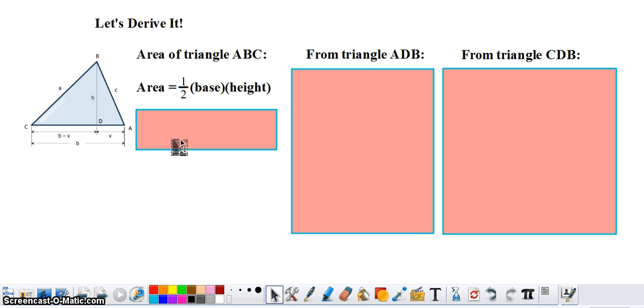Now from triangle ADB, I need you to write an equation using the Pythagorean theorem. If you wrote that x squared plus h squared equals c squared, then you are correct.